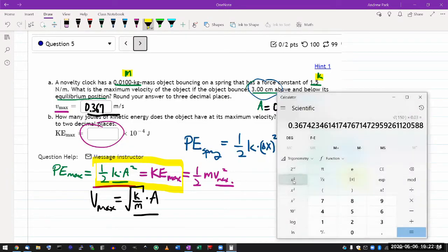I can just plug in 0.5 or 1 half times spring constant, 1.5, times the amplitude, 0.03 squared.